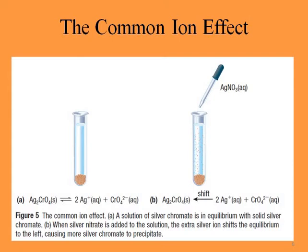We could expect a similar result if we added a solution that contained chromate ions. In general, adding a solution that contains a common ion will shift the equilibrium toward the solid and may cause some of the ions to precipitate from solution. Lowering the solubility of an ionic compound by the addition of a common ion is called the common ion effect.